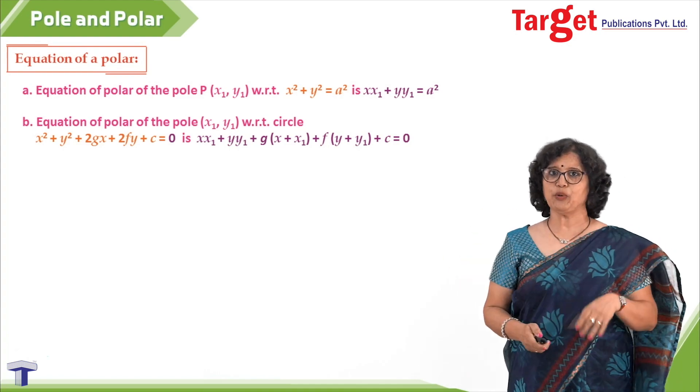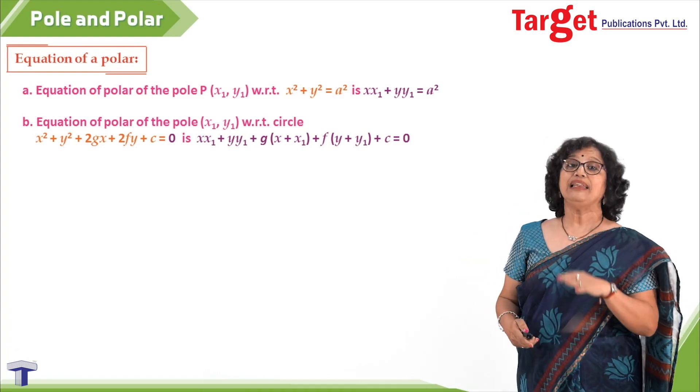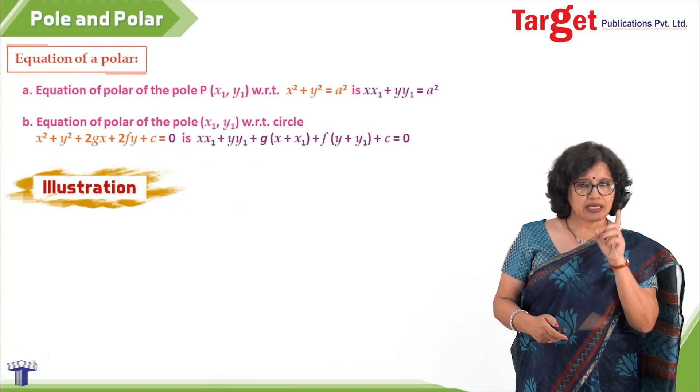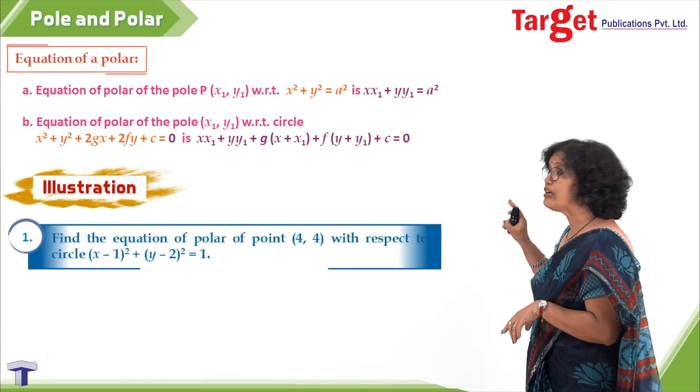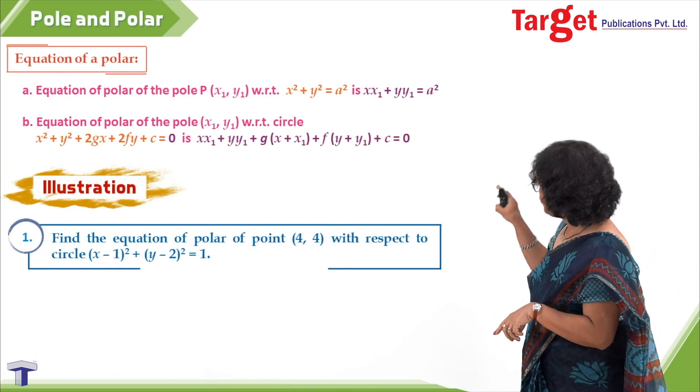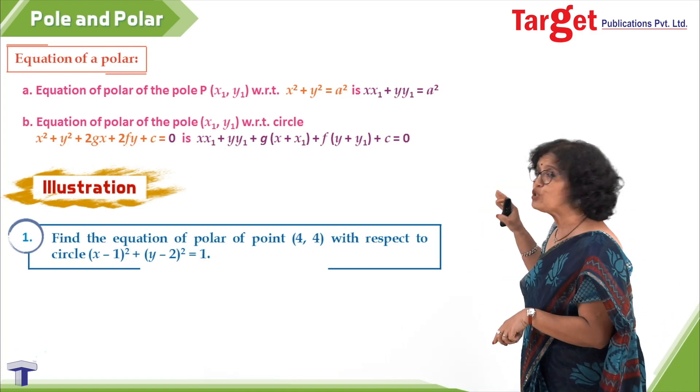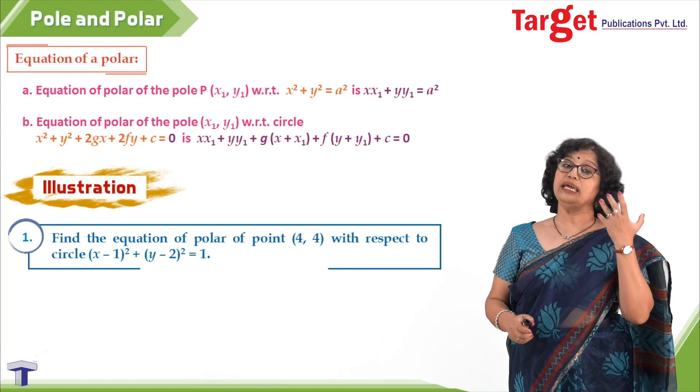So that is the equation of the polar in two different situations. Let me take one illustration for clarifying things further. My illustration is: find the equation of the polar of point (4, 3) with respect to the circle (x - 1)² + (y - 2)² = 1.